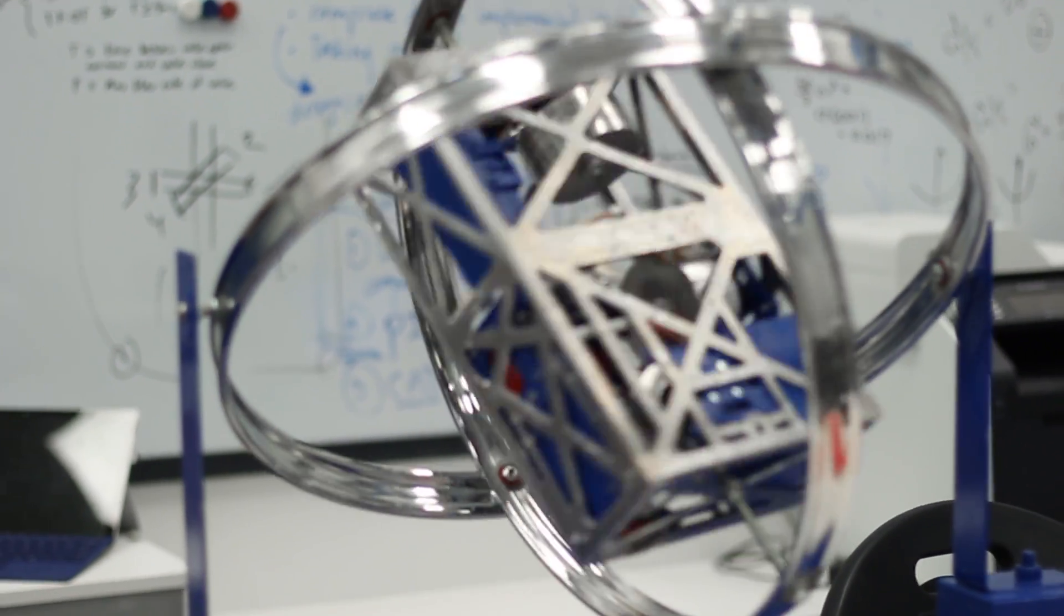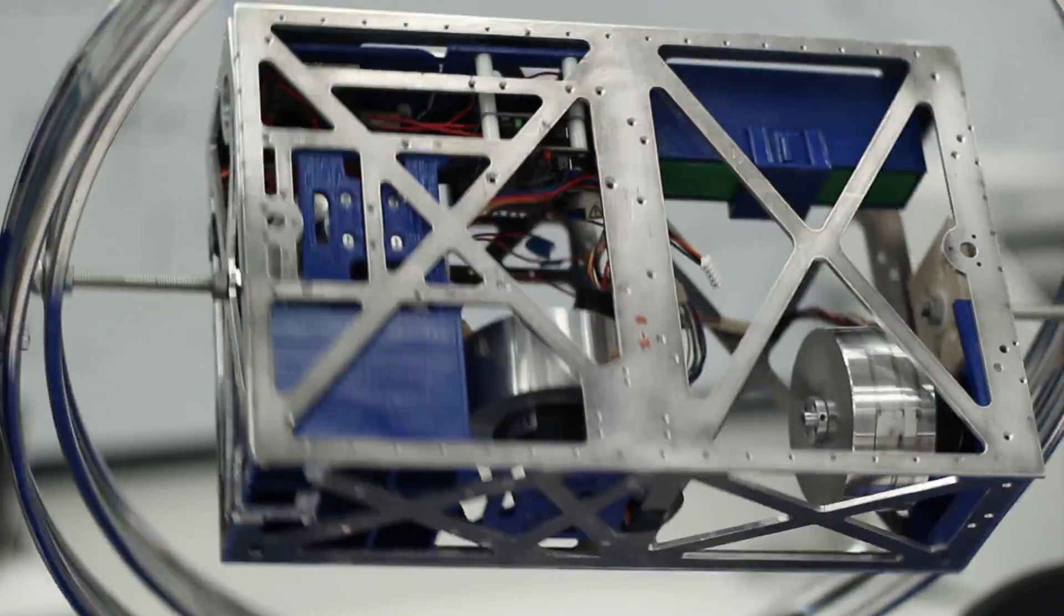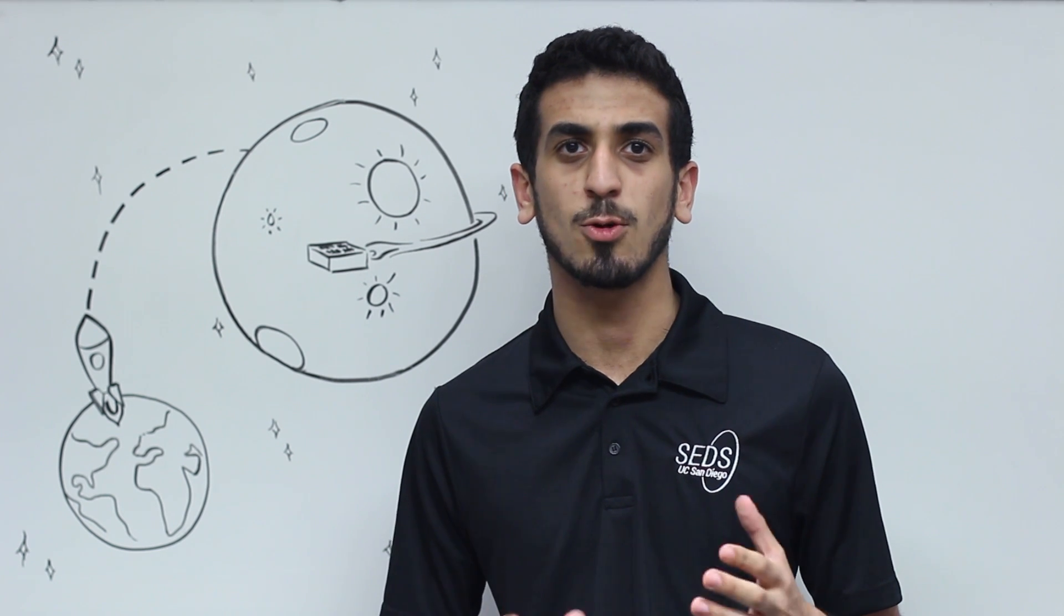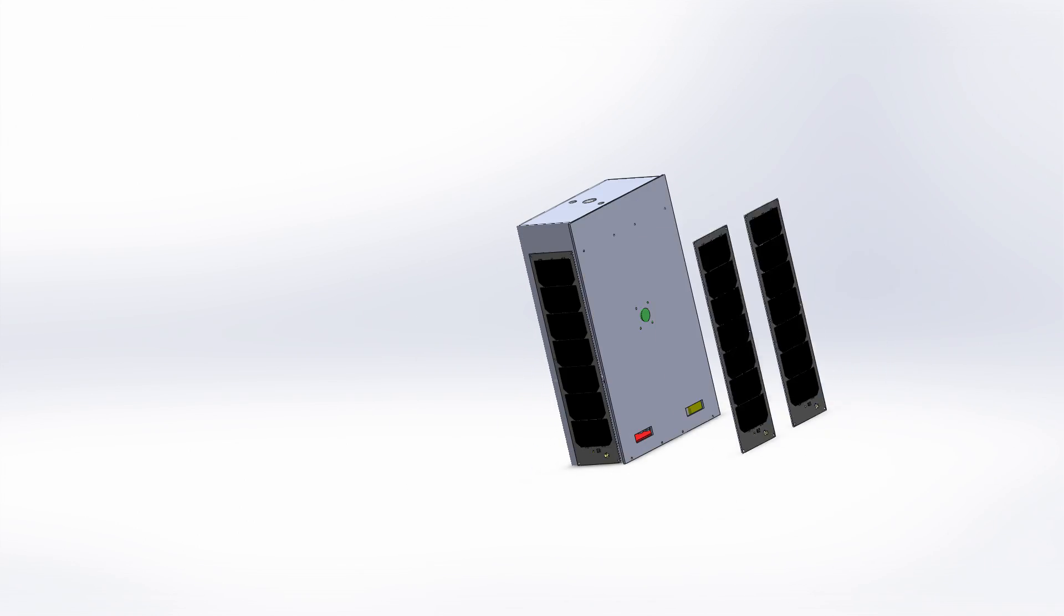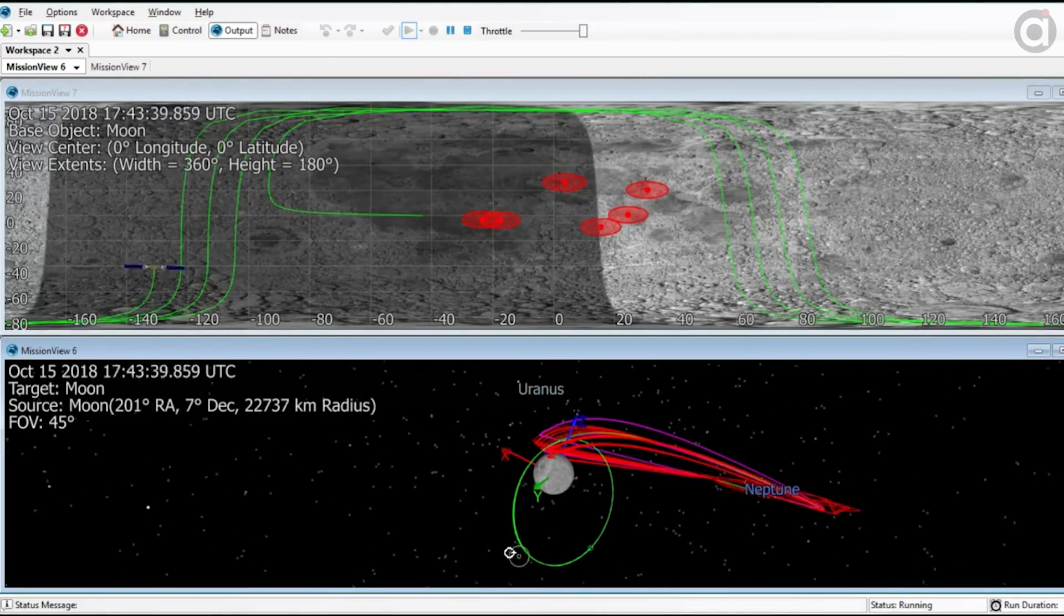Tritea is a 6U cube sat equipped with a 3D printed hydrogen peroxide thruster. This works by decomposing hydrogen peroxide through a catalyst bed to produce thrust. Most cube sats are stuck in the orbit they're deployed in. However, Tritea's unique propulsion system gives it the freedom to maneuver as the mission requires.